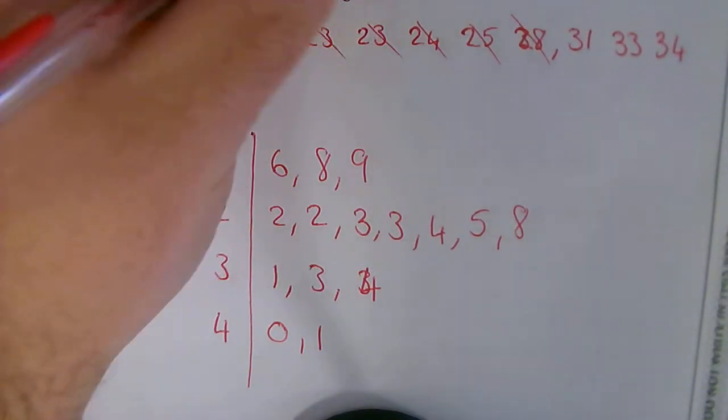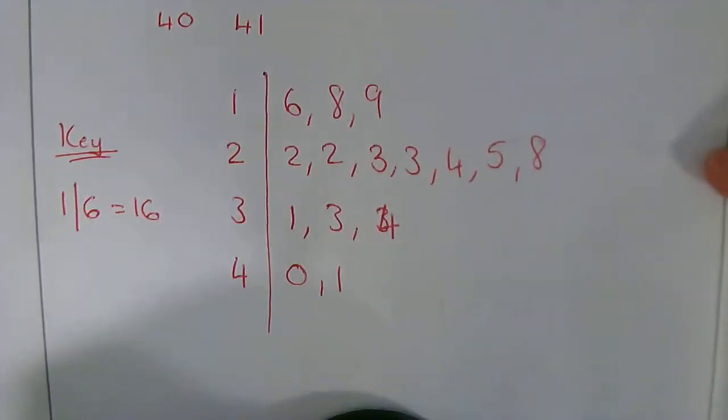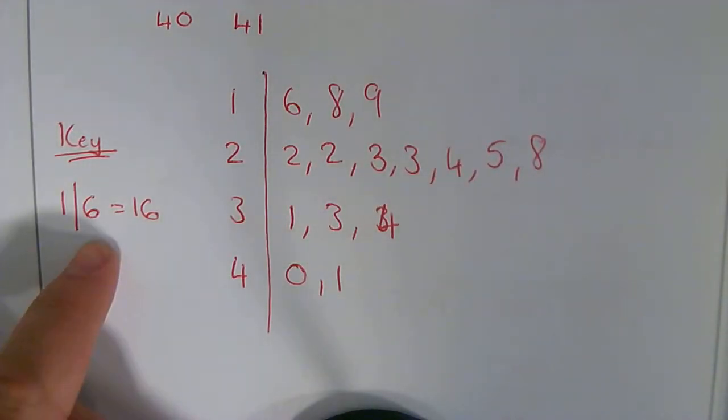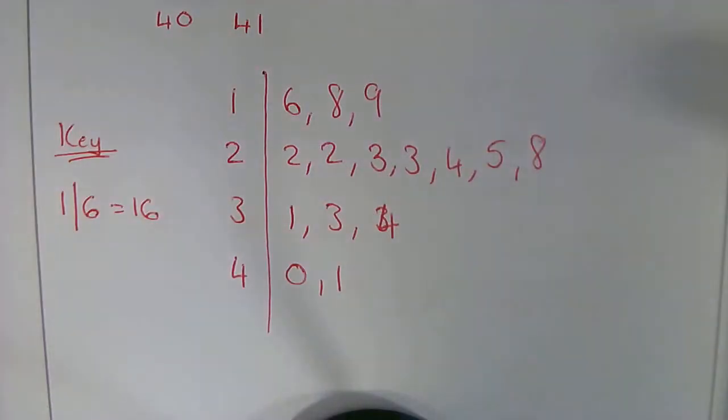Good, there were 15 cyclists at the start. So I've got my 15 numbers there. I've included my key. That's clearly my stem, and they're my leaves, and they're in order. So that's my three marks. Thank you.